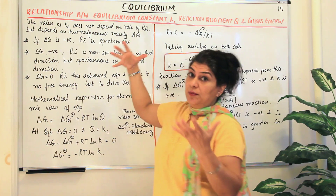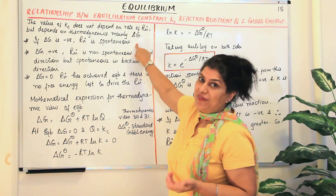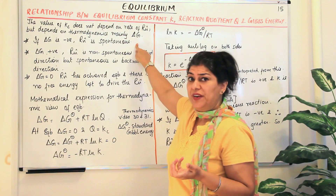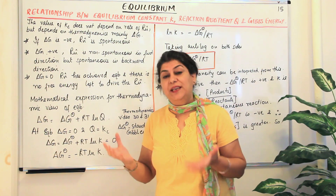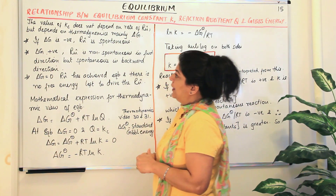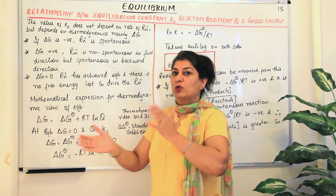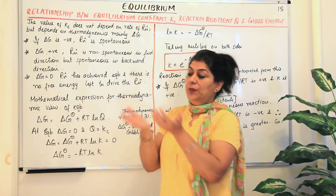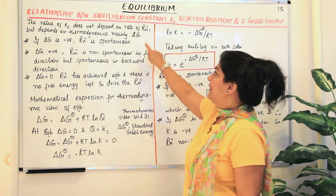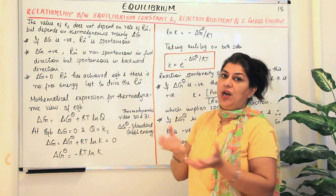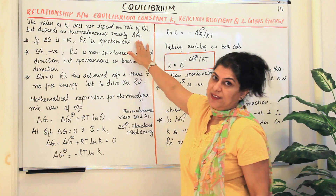In thermodynamics, it mainly depends on the value of delta G — the change in free energy. What is free energy? It is the amount of energy that is free to carry out work in a chemical reaction. After using up all the thermodynamic energy, whatever energy is left free to do work is known as the Gibbs free energy, and the change in a particular reaction gives you the value of delta G.